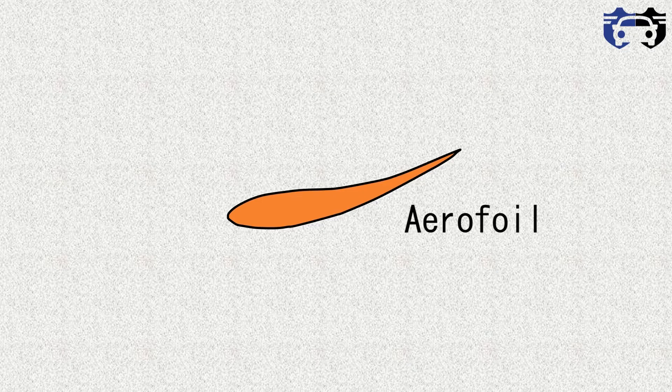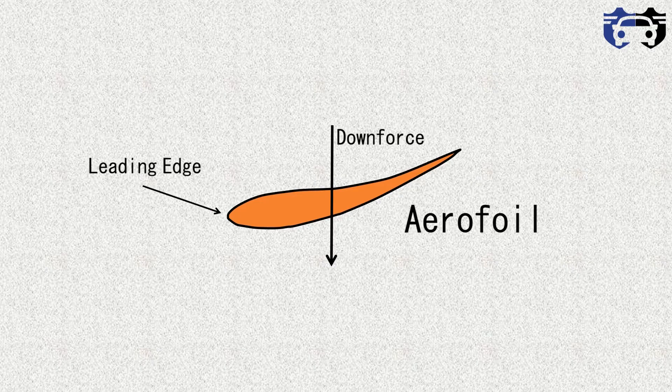Here we are having the aerofoil. Basically it's a curved structure for giving the optimum ratio of lift and drag or downforce and drag. This is the inverted aerofoil for producing the downforce. The front is called the leading edge and the rear is called the trailing edge.